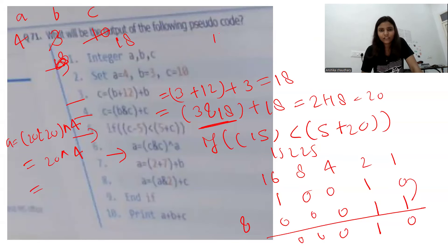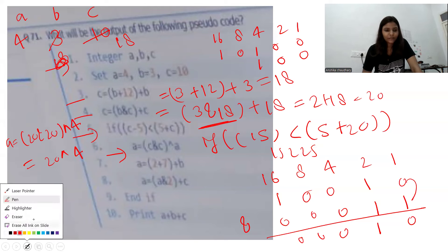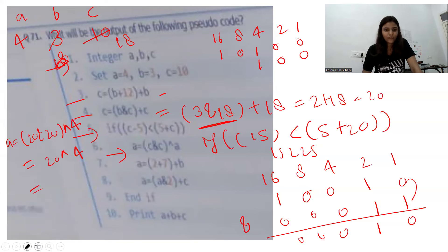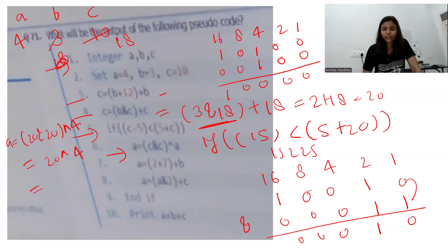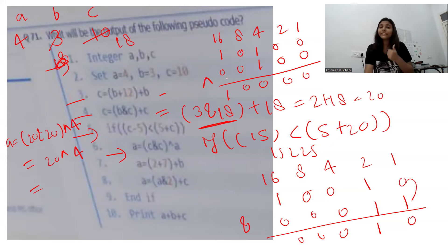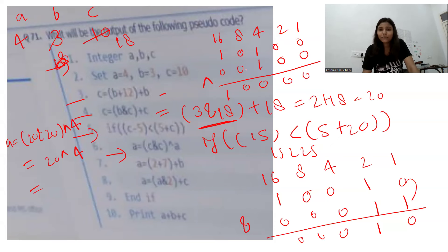Converting 20 to binary using 16-8-4-2-1: 16 plus 4 gives 20, so binary is 1 0 1 0 0. Converting 4 to binary: 0 0 1 0 0. XOR works when both operands are different — result is 1; if same — result is 0. XOR of 10100 and 00100 gives 1 0 0 0 0, which is 16. So a is now 16.